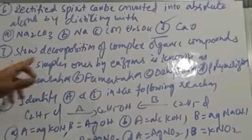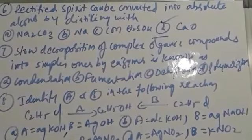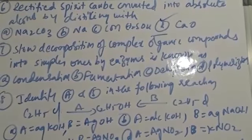Slow decomposition of complex organic compounds into simpler ones by enzymes is known as fermentation. This is a purely conceptual question. Starch, molasses, sucrose, and maltose decompose into simpler units like glucose and fructose. From glucose and fructose we can prepare ethyl alcohol. That process is called fermentation.